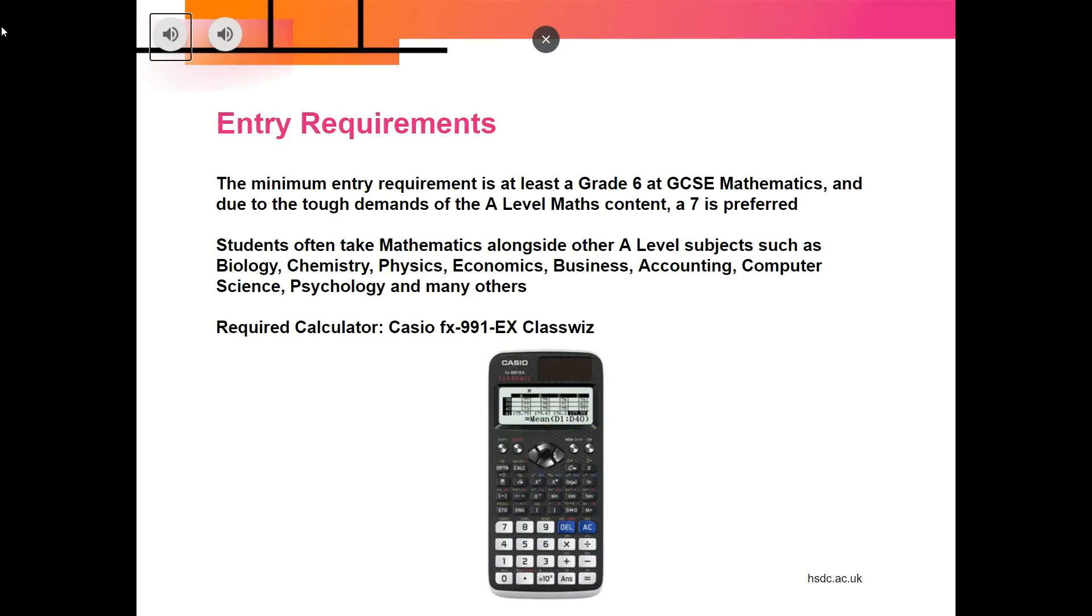A level mathematics is demanding. You will need at least a grade six at GCSE mathematics, but it would be preferable to have a grade seven or above. Listed here are other courses that use mathematics and students often take them alongside A level maths. In particular, chemistry and especially physics will make use of some of the aspects of A level maths. But the most important prerequisite is that you really enjoy the subject and are willing to put in the effort to succeed.